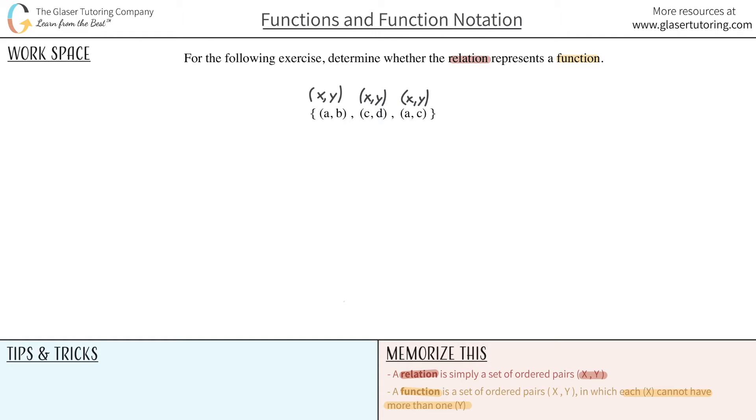So now what I want to do is I want to look at each individual x. So I'm going to highlight that. So here I have an x value. It tells me it's a. Here's an x value at c. Here's an x value. It's a again.